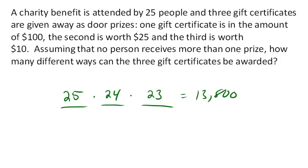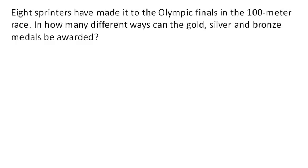Eight sprinters have made it to the Olympic finals, 100 meters. How many different ways could the gold, silver, and bronze be awarded? Or how many different possible outcomes are there, basically? So, similar to the last problem, there are eight possibilities for the first place, for the gold. There are seven possibilities for the silver. And there are six possibilities for the bronze. That gives us a total of 336 different orderings, or 336 different outcomes.